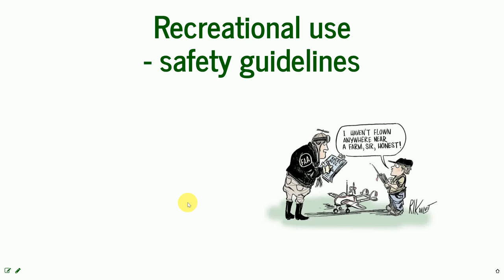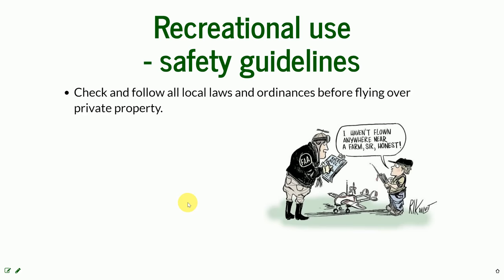Even recreational users need to be aware that some private property owners have special rules for operating drones above their property. NC State, for example, has its own rules for people who want to fly in the airspace above their campus. It is good practice to always ask the owner of the property or notify them that you are going to be flying over their house or fields. Even if the airspace above their property does not technically belong to them, it is always better to have friends among the owners than to expect problems.